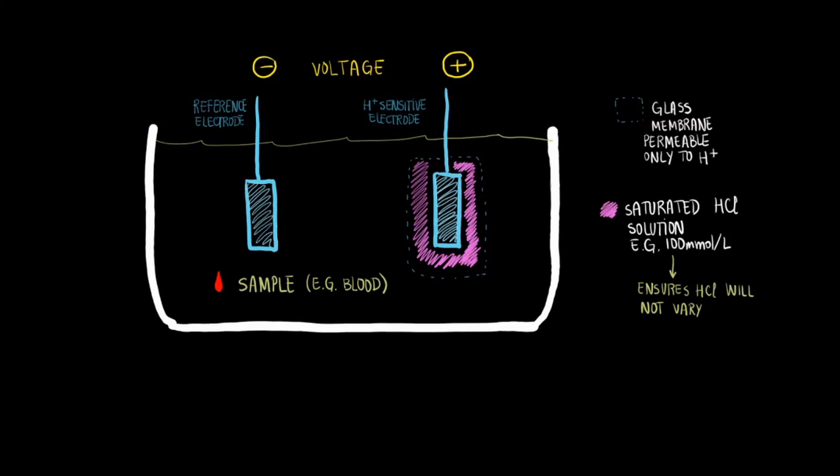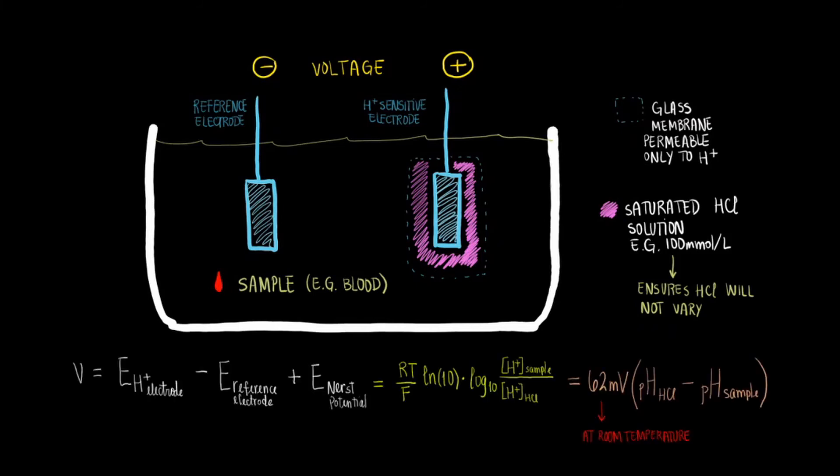By measuring the voltage across the electrodes, you can then calculate the concentrations of hydrogen ions between the sample and the HCl-saturated compartments. These equations should now make much more sense. You can use the measured voltage to calculate the pH of any sample you want, as long as you have first calibrated your electrode with a sample or buffer of known pH, such that you will have solved for the pH of the HCl compartment first.